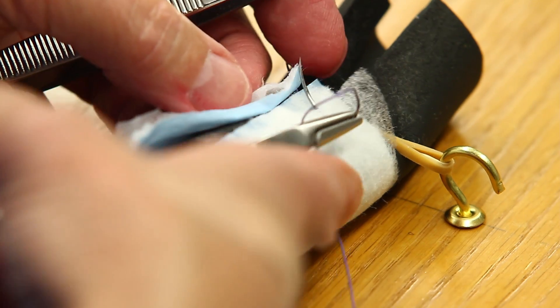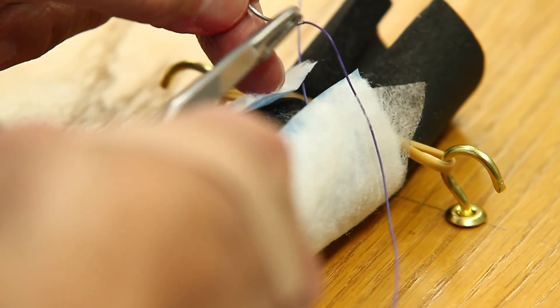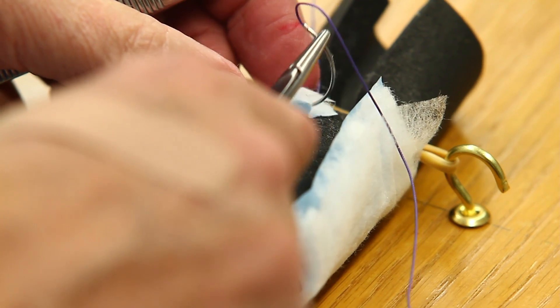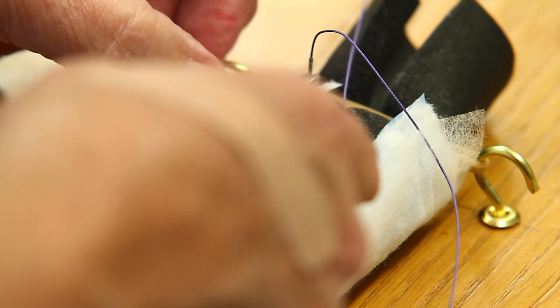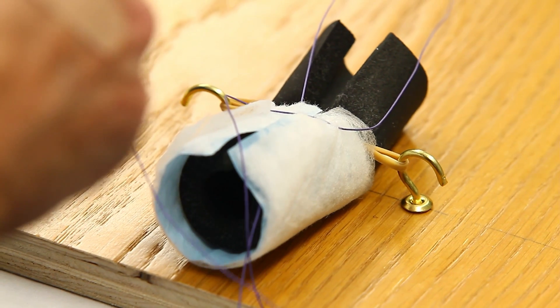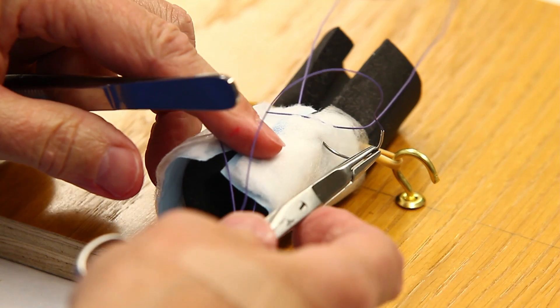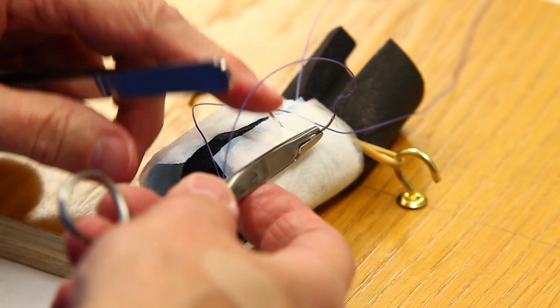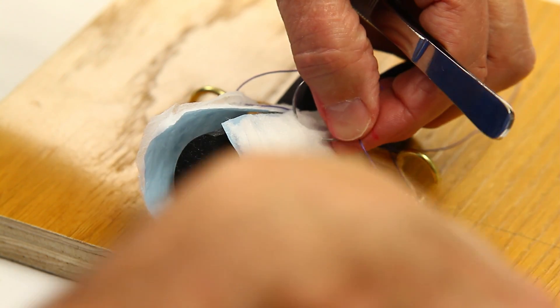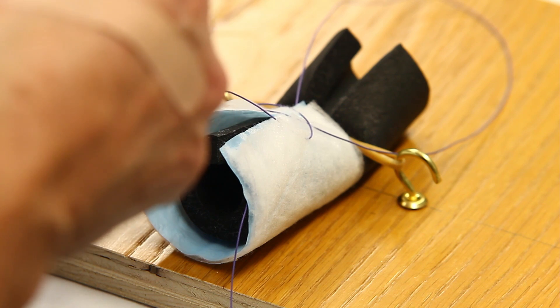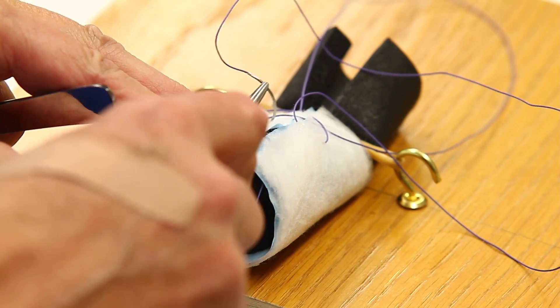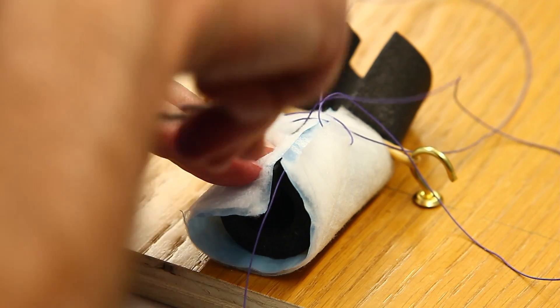Delicately pull the needle up, go across, into this tissue layer, carry it up. Skim along the tissue layer, picking up the delicate internal rectal sphincter. And cross over to the other side, follow the curve of the needle.